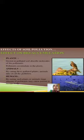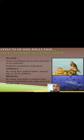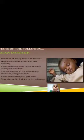Effect on bioaccumulation. Plants grown in polluted soil absorb the molecules of the pollutants, and pollutants accumulate in the plants. Animals, by eating these polluted plants, take on all the pollutants. Humans, by eating such plants or animals, large amounts of pollutants may cause poison in the human body.